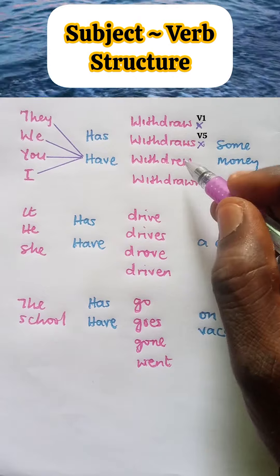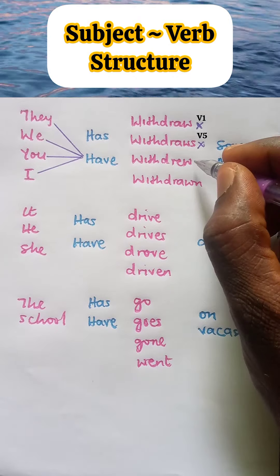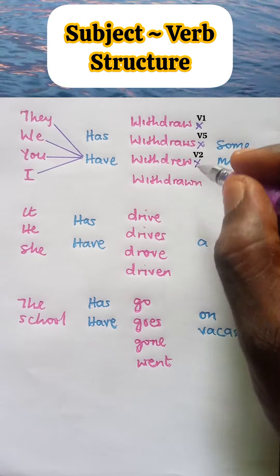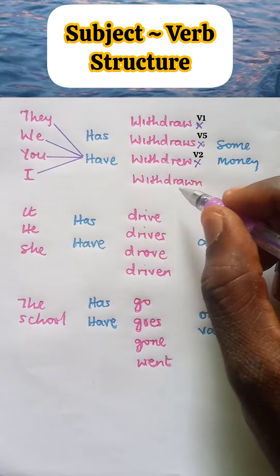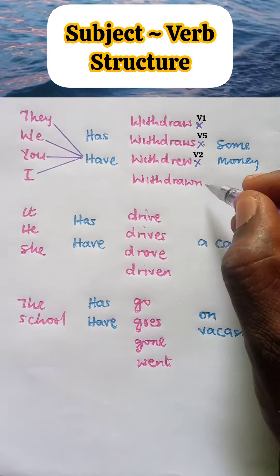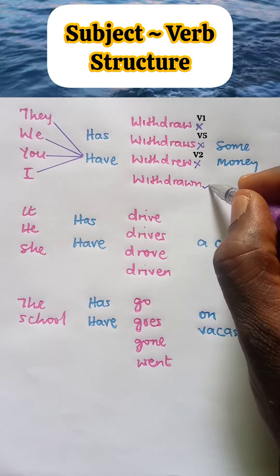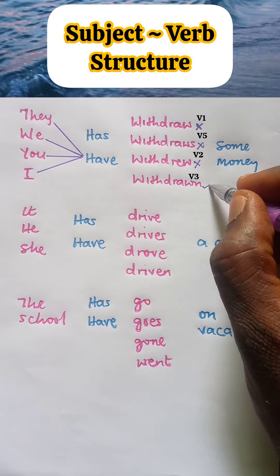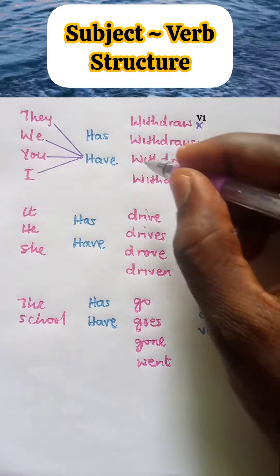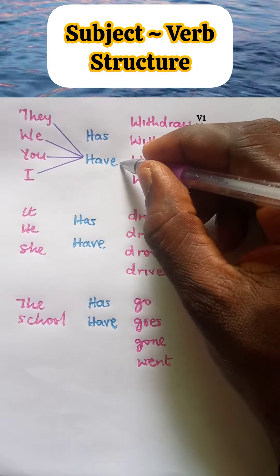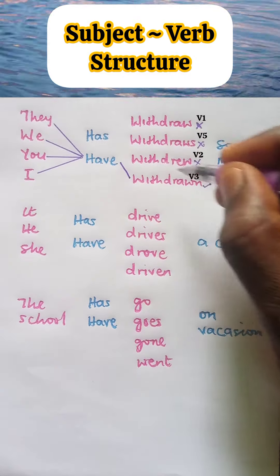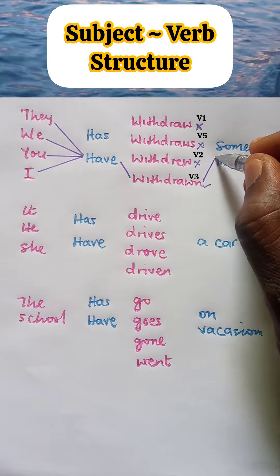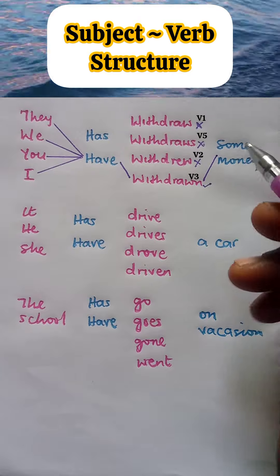Have withdrew? Wrong — withdrew is verb two. Have withdrawn? Correct! Withdrawn is verb three, which is past participle. So that we have: have withdrawn some money.